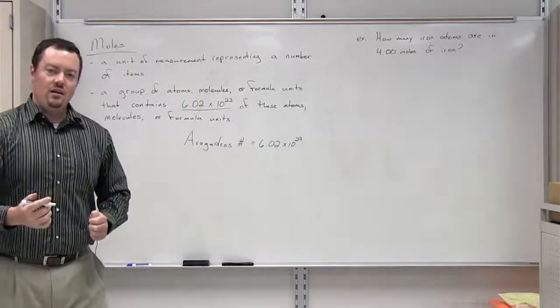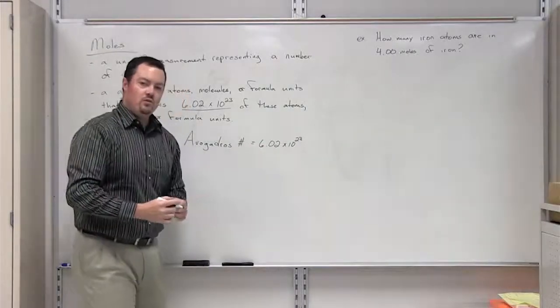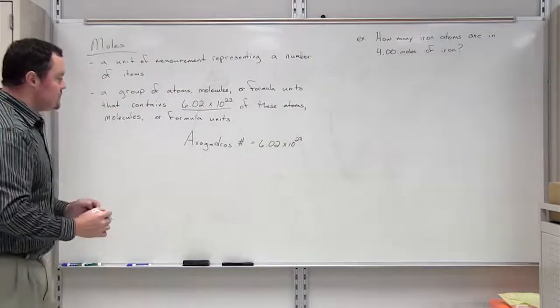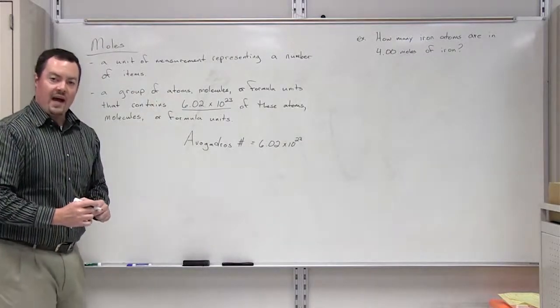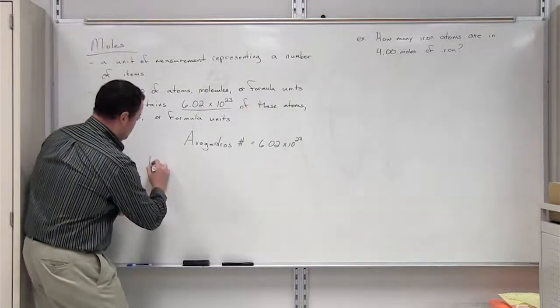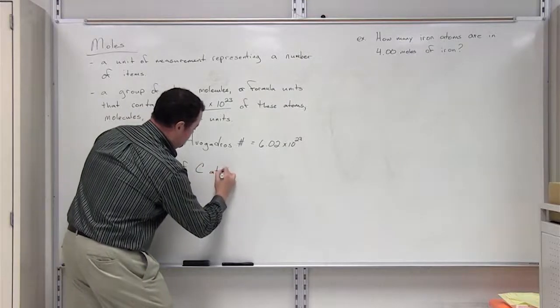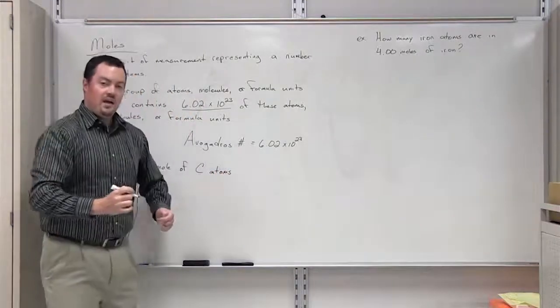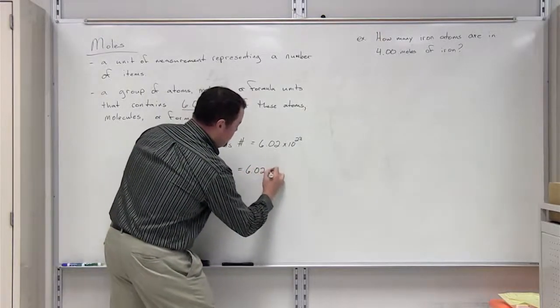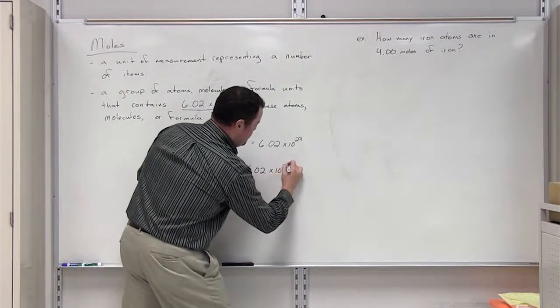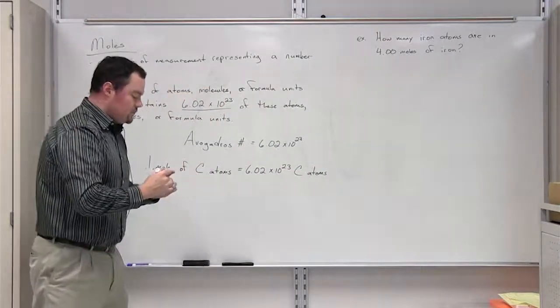Just like a dozen means 12, a mole means 6.02 times 10 to the 23rd power. So if I were to say I have one mole of carbon atoms, I'm simply saying that I have 6.02 times 10 to the 23rd carbon atoms.